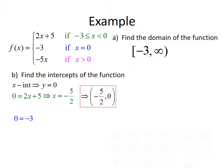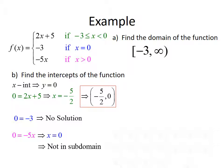Looking at the second part: if y equals 0 then 0 equals negative 3, which has no solution, so no x-intercept there. For the third formula, 0 equals negative 5x gives x equals 0, but since the domain for this piece requires x greater than 0, and 0 is not in that domain, there's no x-intercept there either. For the y-intercept, we set x equal to 0. Since x equals 0 falls in the second piece, f of 0 equals negative 3, giving a y-intercept at 0, negative 3.